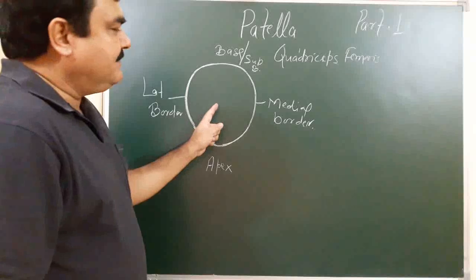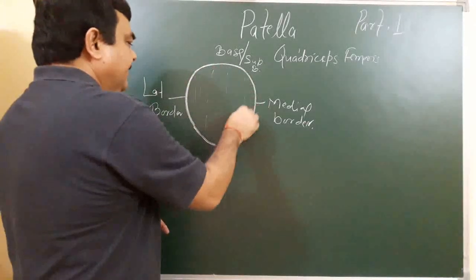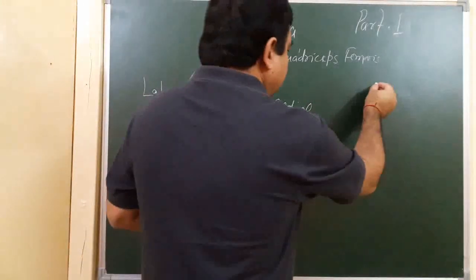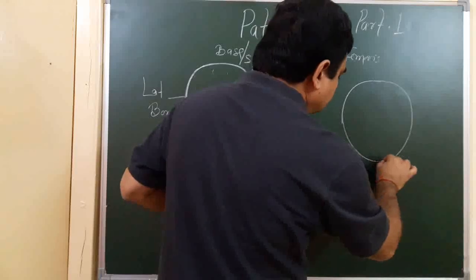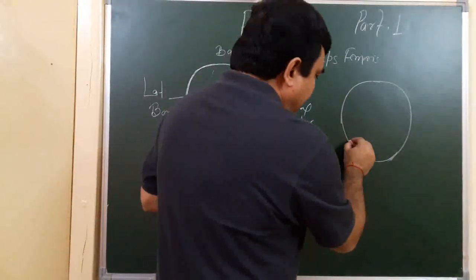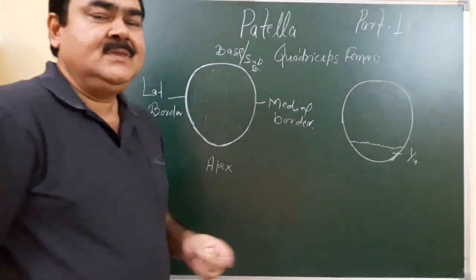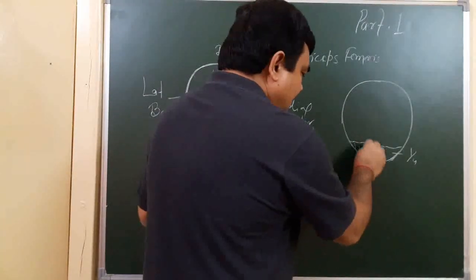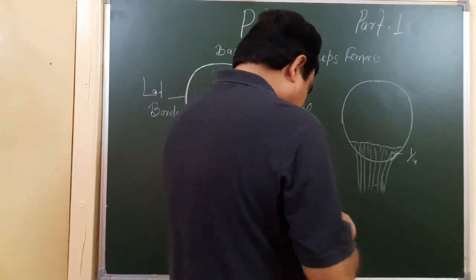In the anterior view, the patella has two surfaces: an anterior surface and a posterior surface. The anterior surface is rough. If you turn it, you can see the posterior surface. About the lower one-fourth part of the posterior surface is rough and non-articular — it provides attachment to the ligamentum patellae.